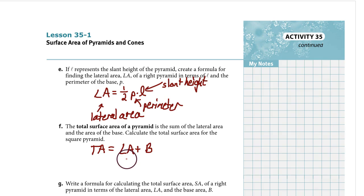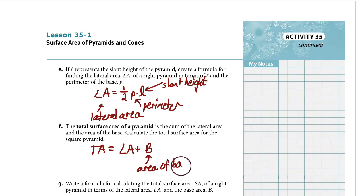For lateral area, we have the formula above. For area of the base, you use whatever formula or technique is needed depending on the shape of the base. If the base of your pyramid is a square, go length times width. If the base is a triangle, go one-half base times height. If the base is a pentagon, use the area formula for pentagons.